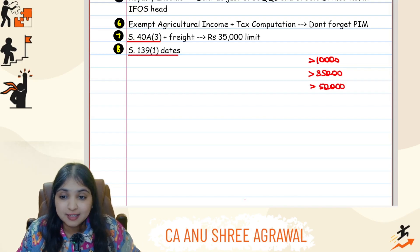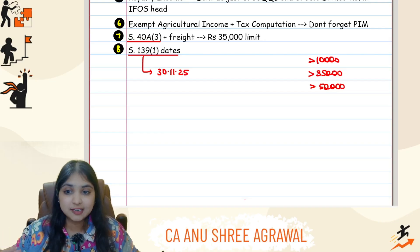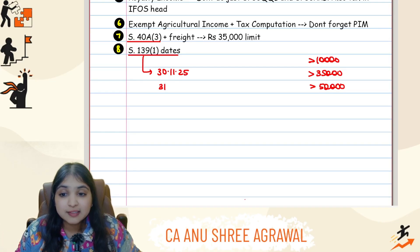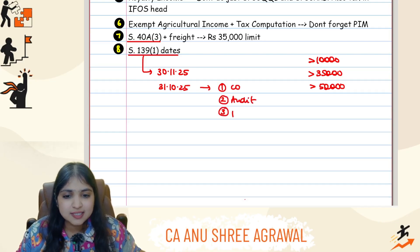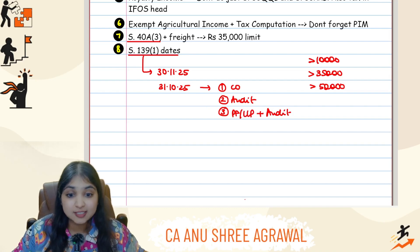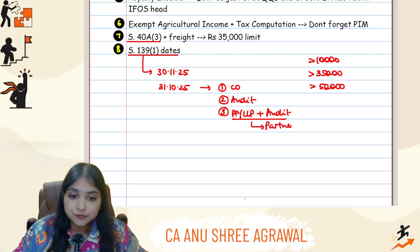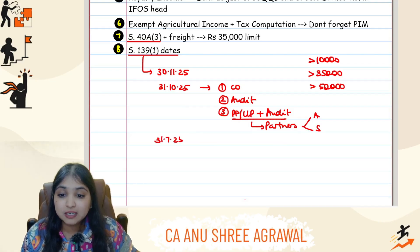One last point: Section 139(1) due dates — there are three. Number one is 30th November 2025, which applies for transfer pricing assessees having specified domestic and international transactions. If that date is not applicable, then 31st October 2025 applies for all companies and all audit assessees. Note that if a firm or LLP has a tax audit applicable, both the firm and all its partners — whether active or sleeping — will have the 139(1) date of 31st October 2025. In all other cases, the date will be 31st July 2025.